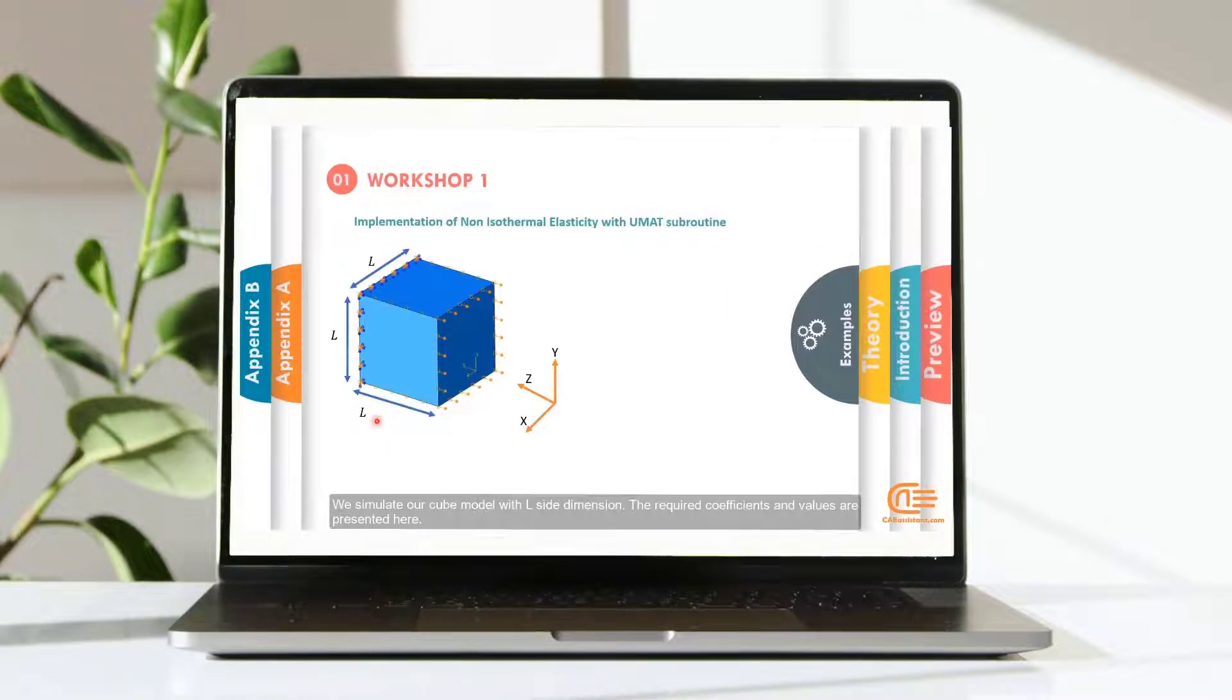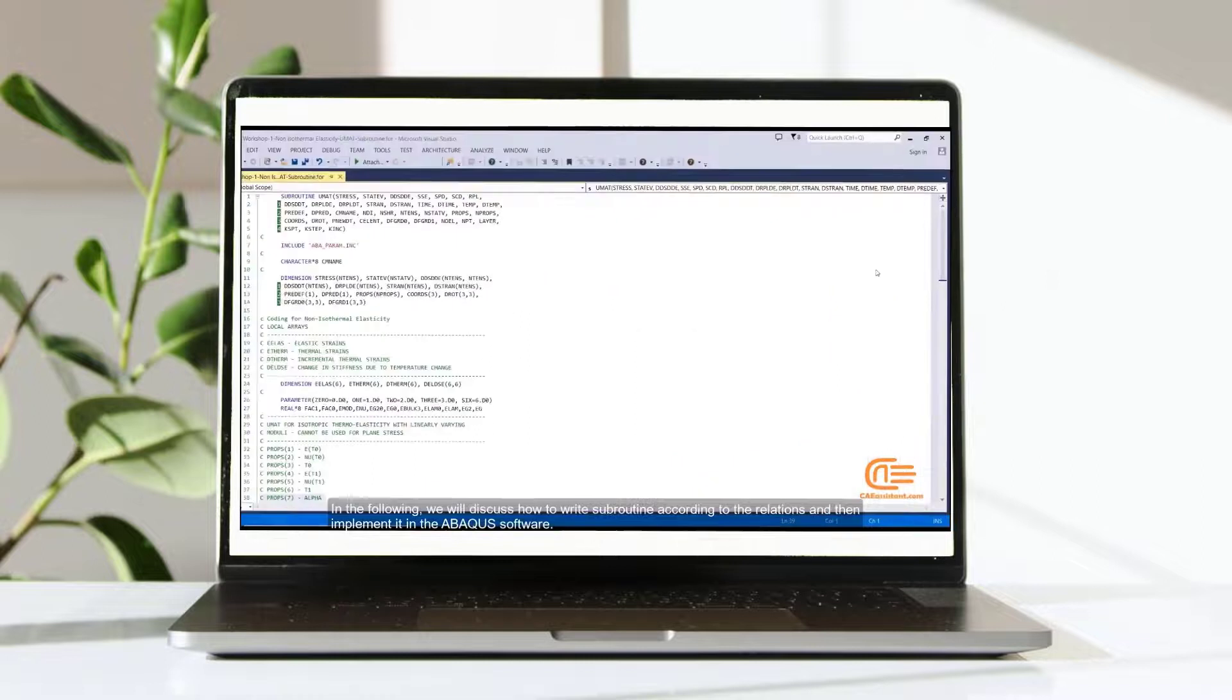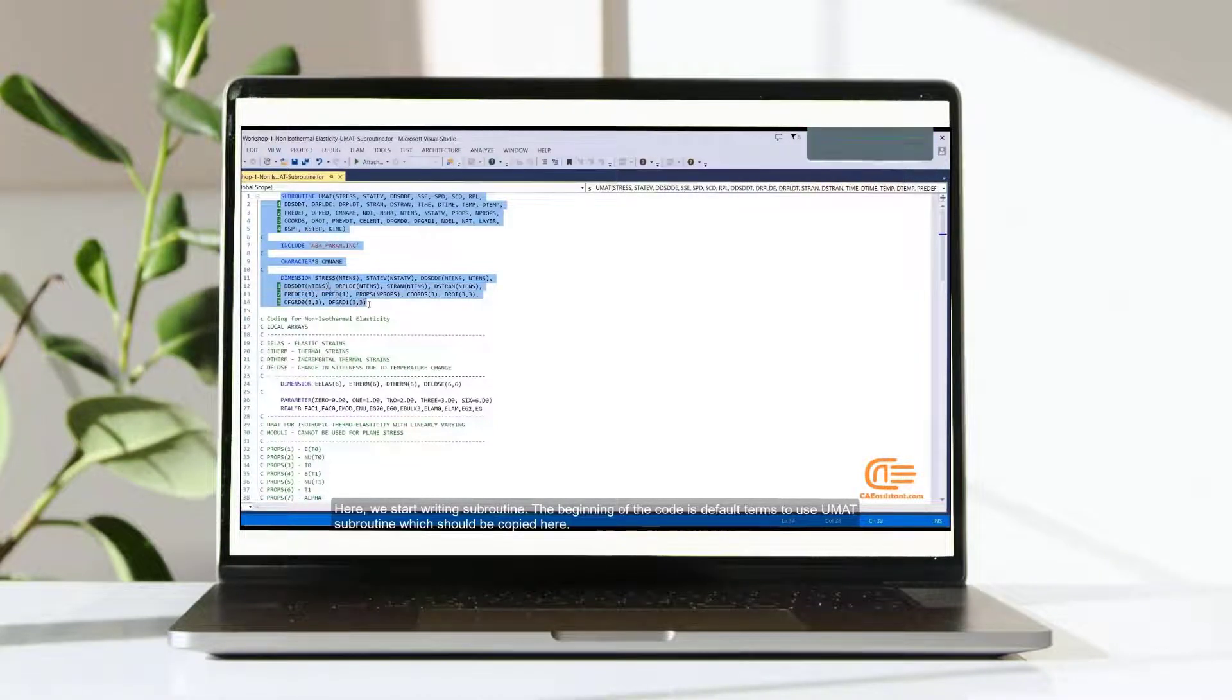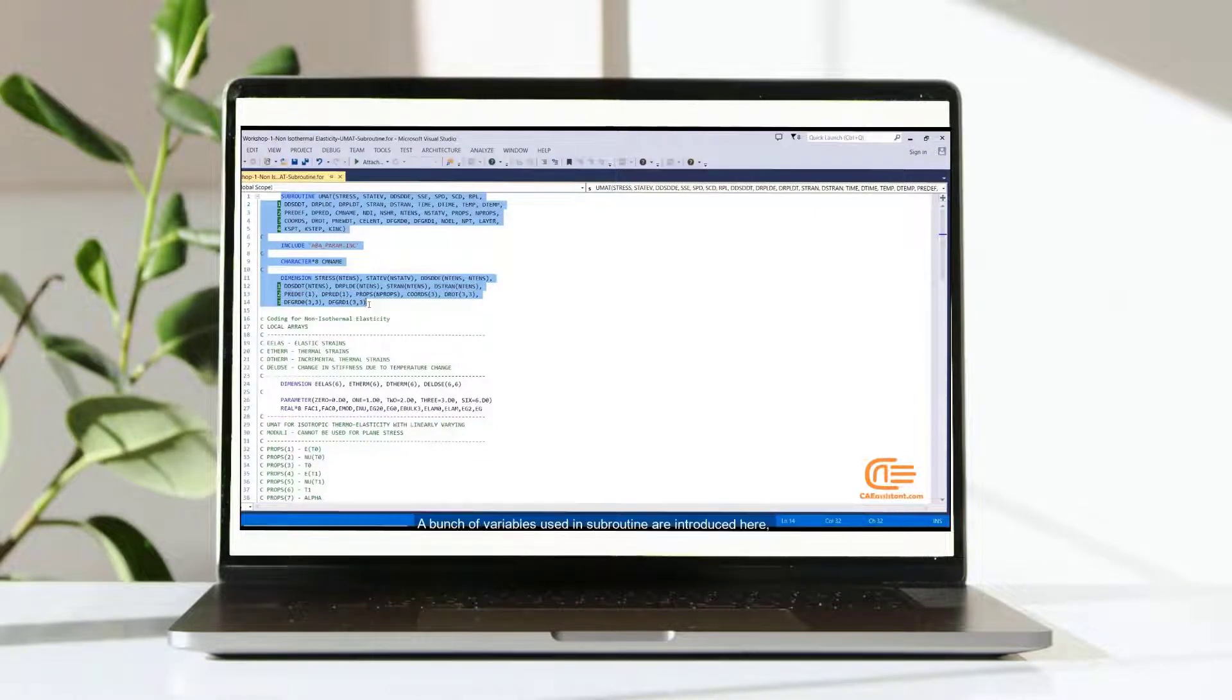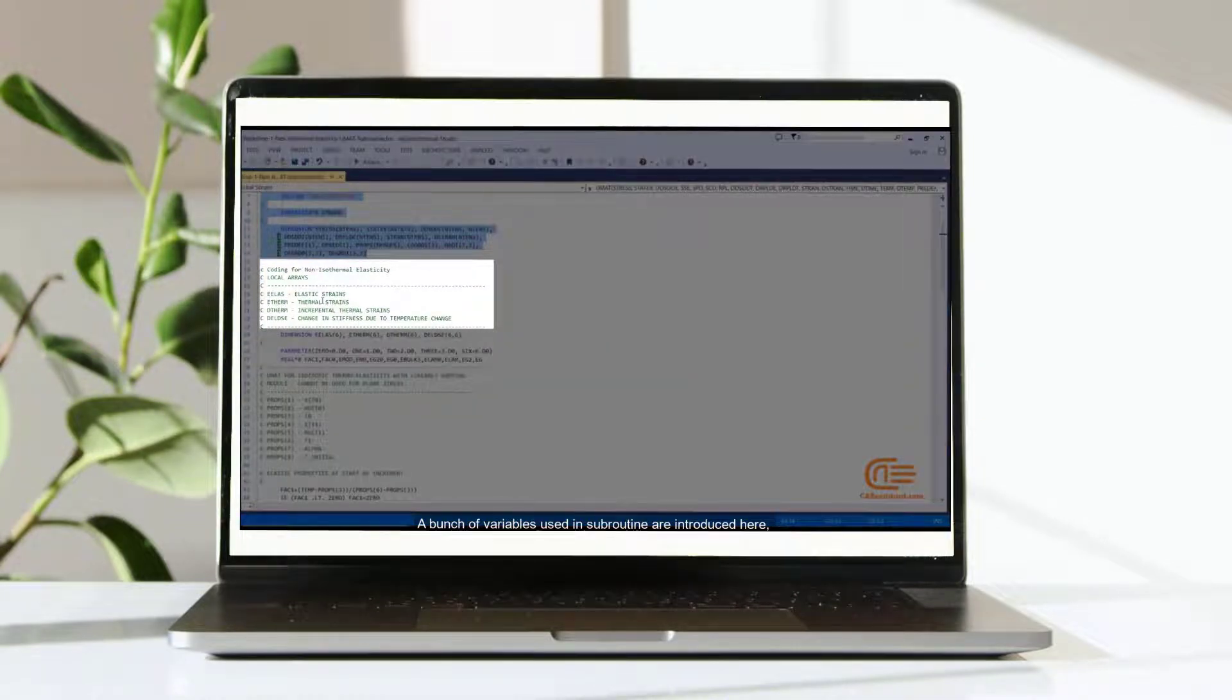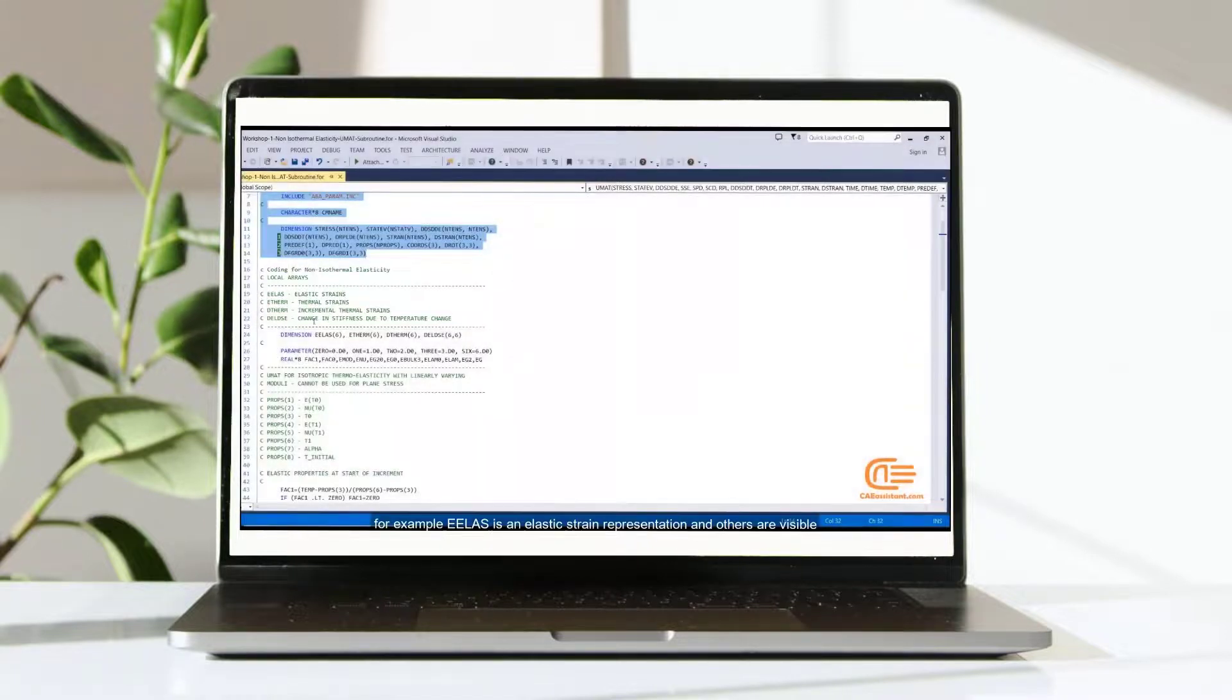We simulate our cube model with L-side dimension. The required coefficients and values are presented here. Here we start writing subroutine. The beginning of the code is default terms to use UMAT subroutine which should be copied here. A bunch of variables used in subroutine are introduced here. For example, EELAS is an elastic strain representation and others are visible.